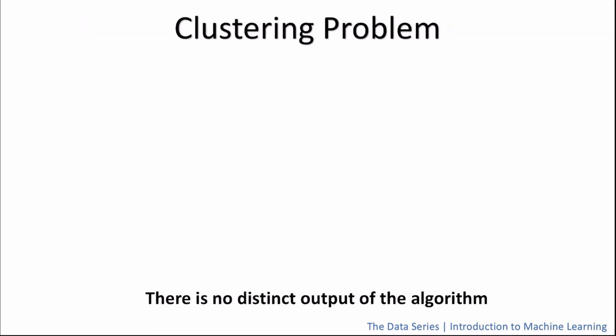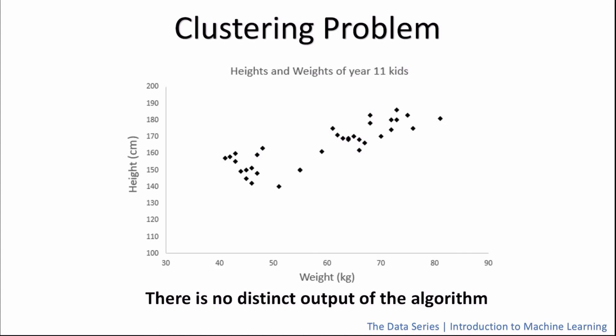Let's take a look at a clustering problem. To do so, look at the following graph. Can you notice any structure within the data? Perhaps we can see that there are two groups, here and here. Let's label these groups group A and group B. An algorithm that is able to identify the structure and cluster the data into different groups is a classic example of a clustering algorithm.